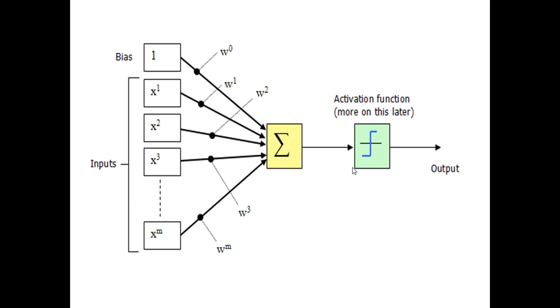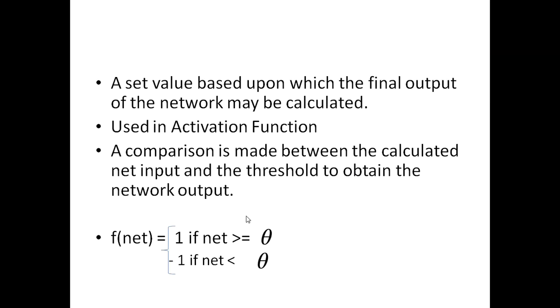That is basically a value that, if the net input for that neuron is greater than or equal to theta, then it will be fired otherwise not. So as you can see, if f(net) equals 1 if net is greater than or equals to theta, then it will be fired. If it is less than theta, then minus 1 means it will not be fired. So what basically will happen? A comparison is made between the calculated net input and the threshold to obtain the network output. So this comparison is important, and we will use activation function.